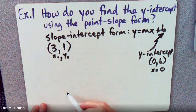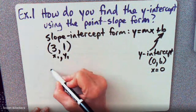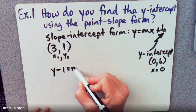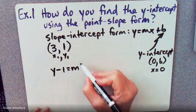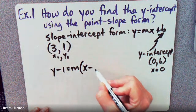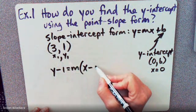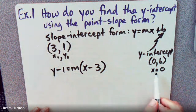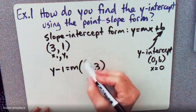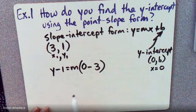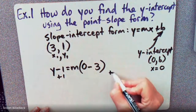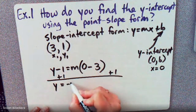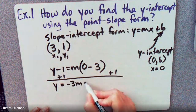So now let's put it into the Point-Slope Formula. We have Y minus 1 equals M times X minus 3. But we know that X is 0 for the Y-intercept, and that's what we're looking for. So we add 1 to both sides, and we get Y equals negative 3M plus 1.